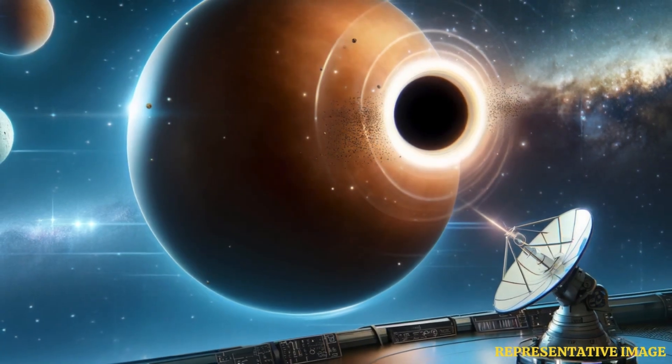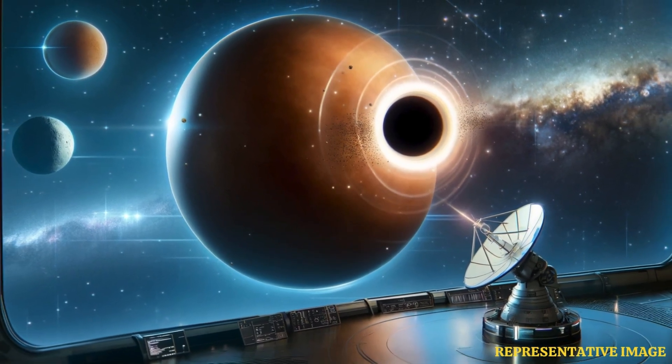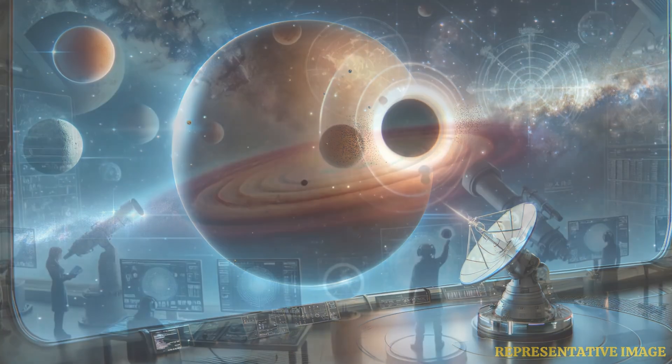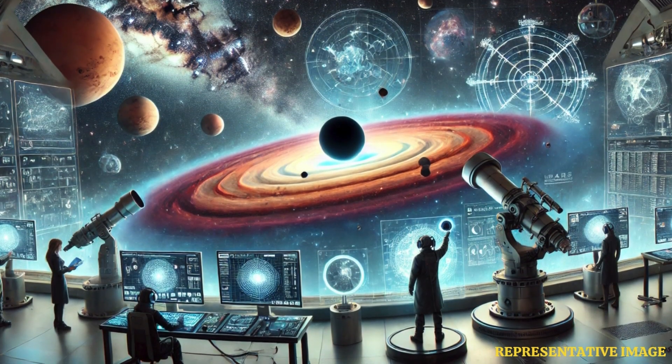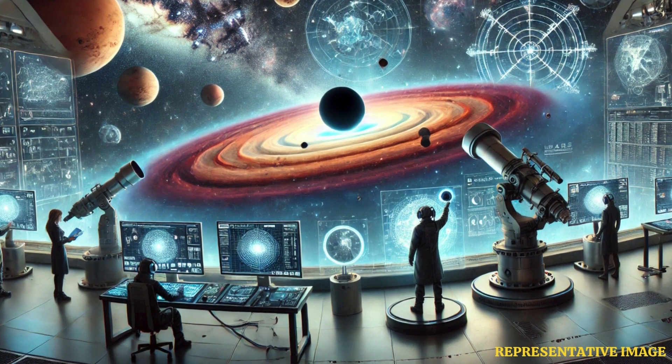Scientists have suggested that a tiny black hole is likely to pass through our solar system after every decade, and this can be spotted by observing the wobbling of Mars. This observation was on the basis of the idea that the majority of dark matter in the universe is filled with minuscule black holes.